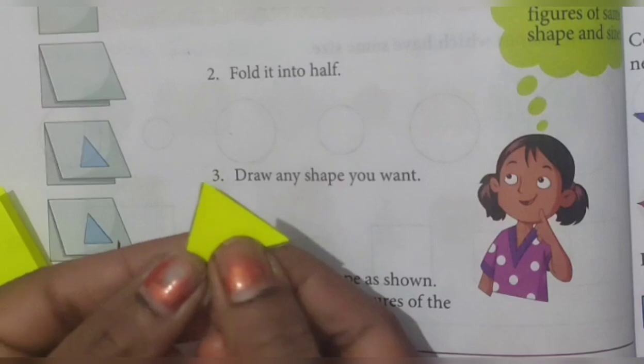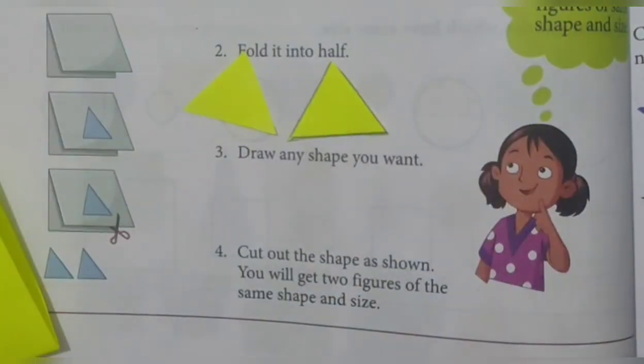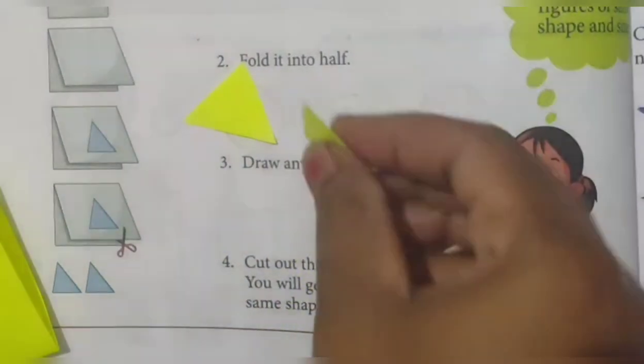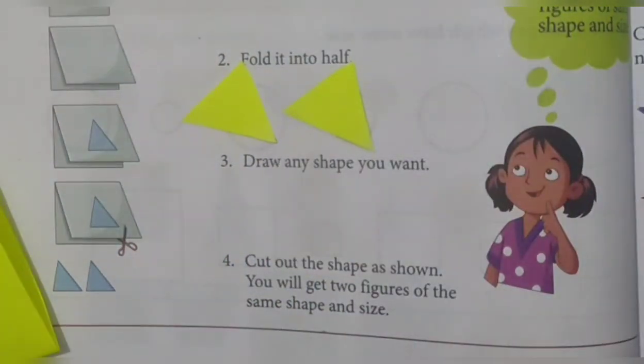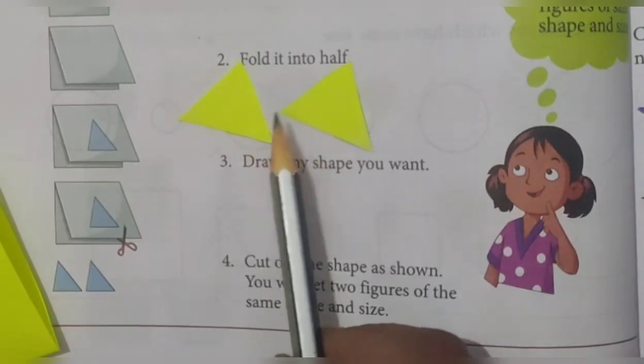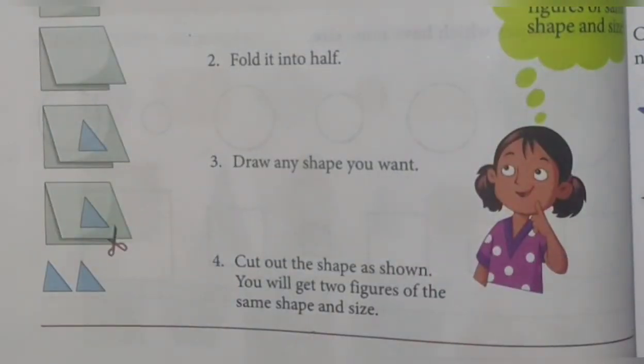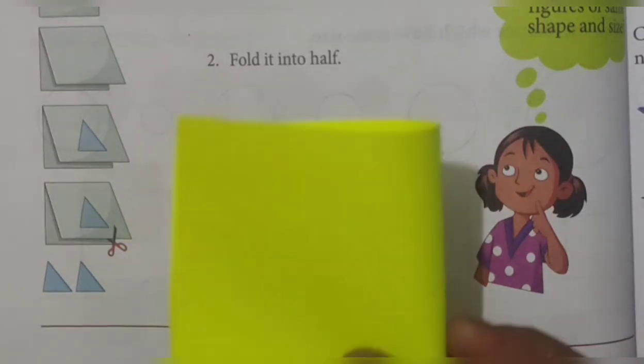Now see here, you have got two triangles of same shape and same size. That means this one is the activity, how you can make the two triangles or two figures of same shape and same size. One more time, you can draw another shape or figure like this.